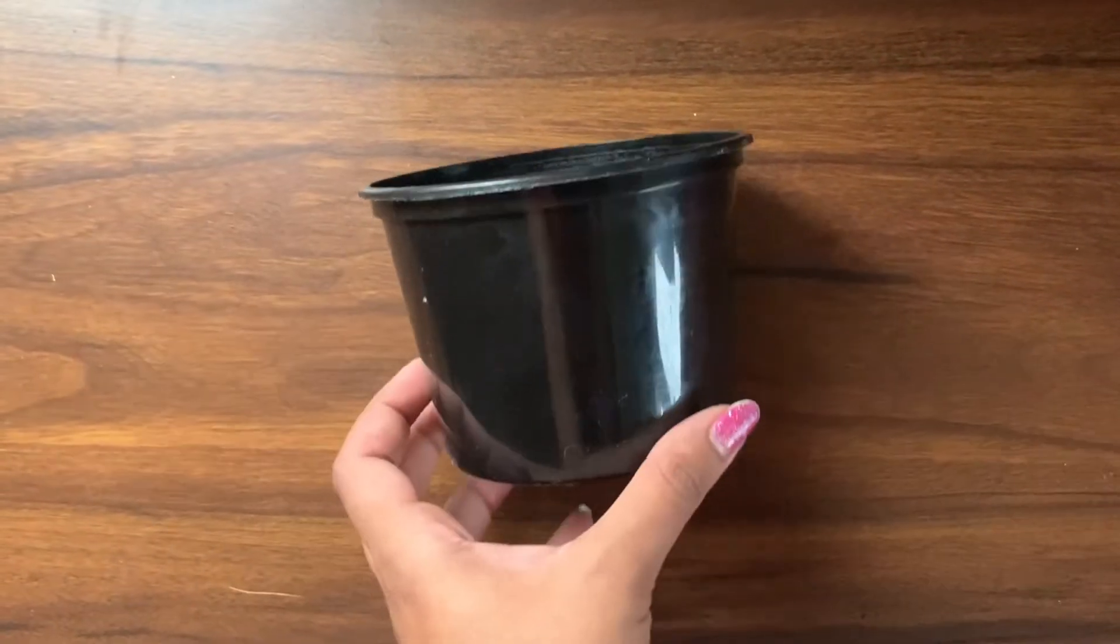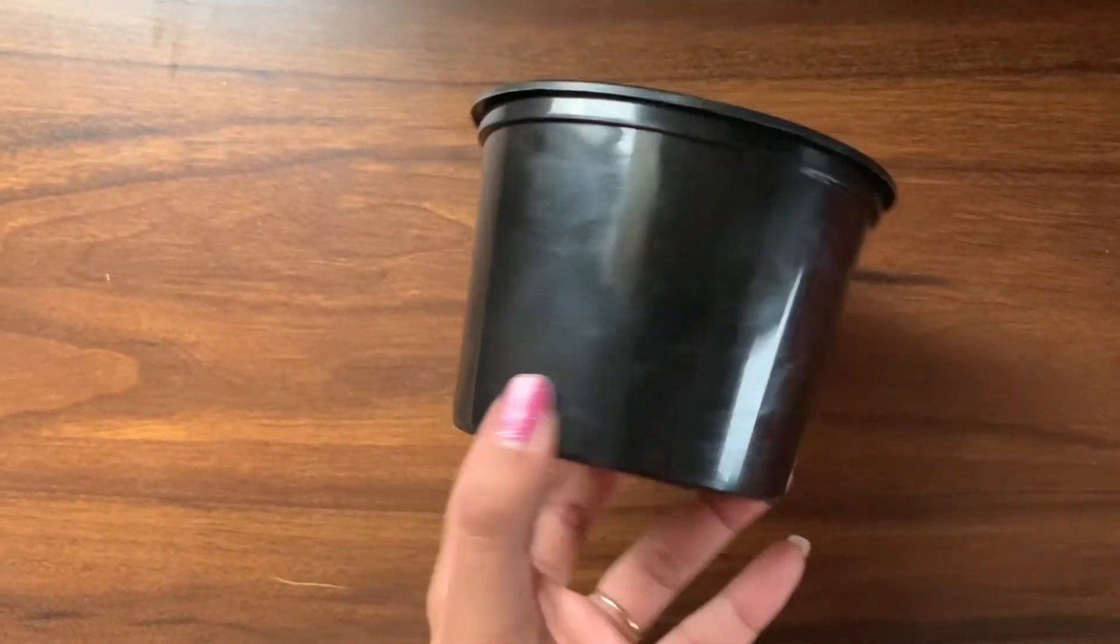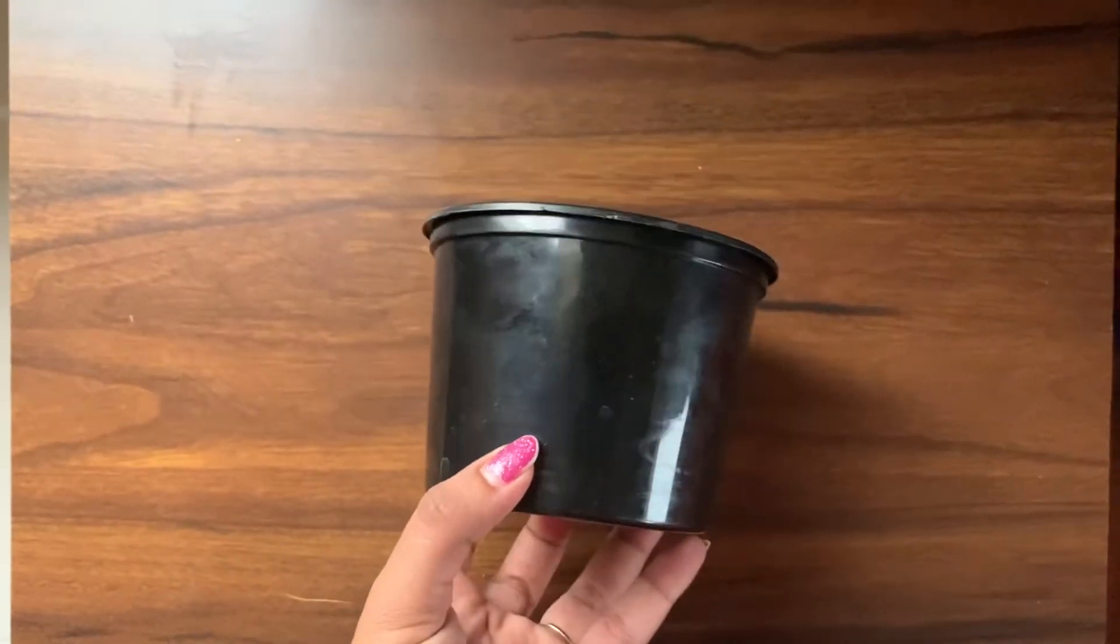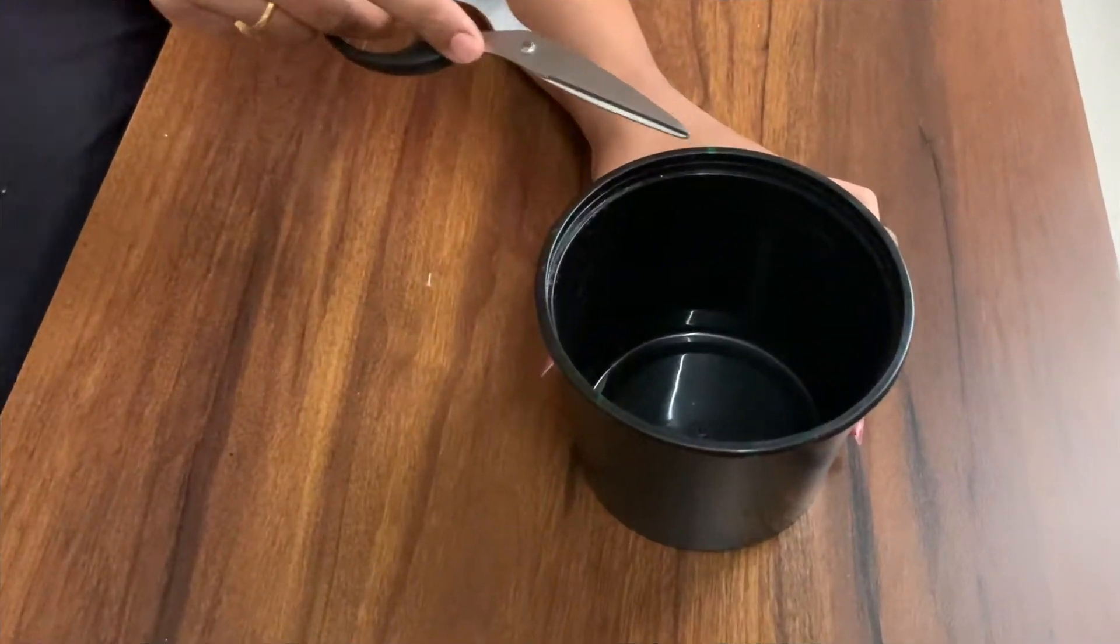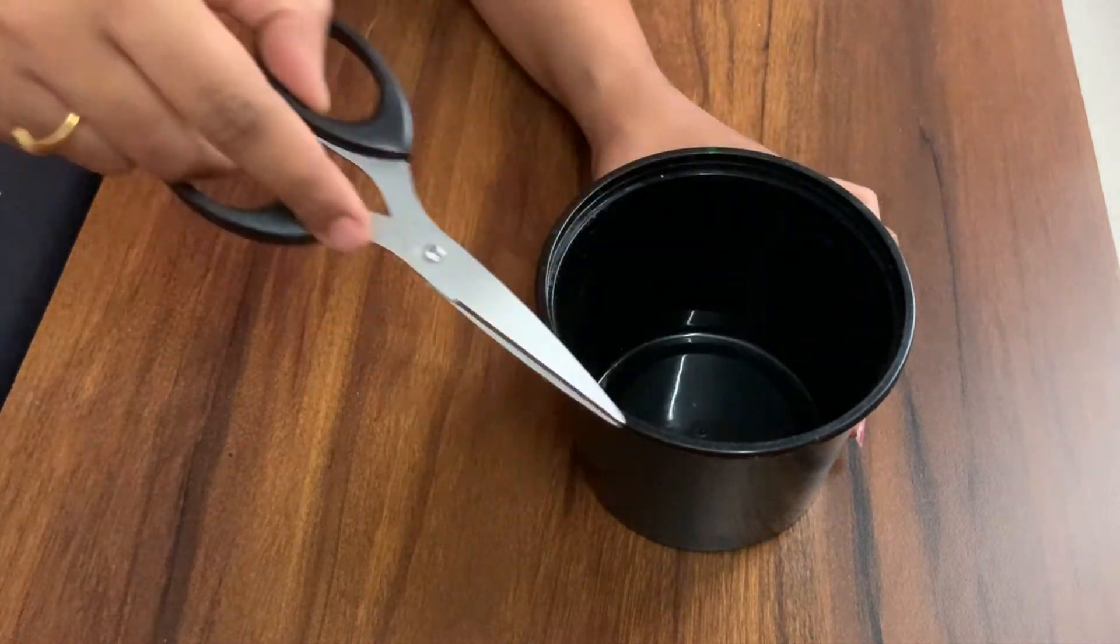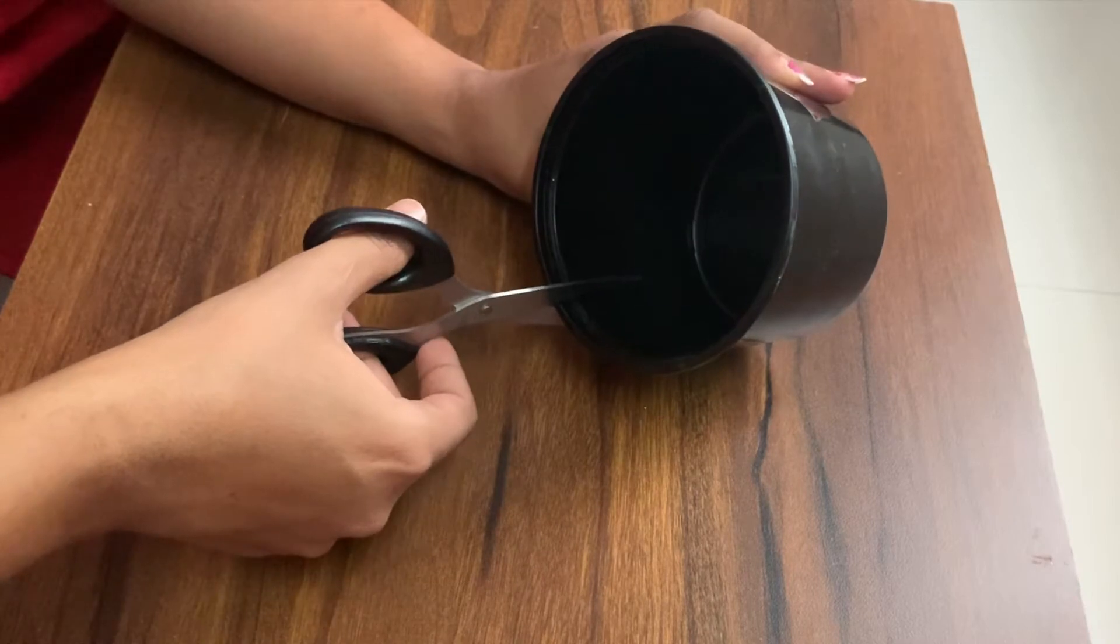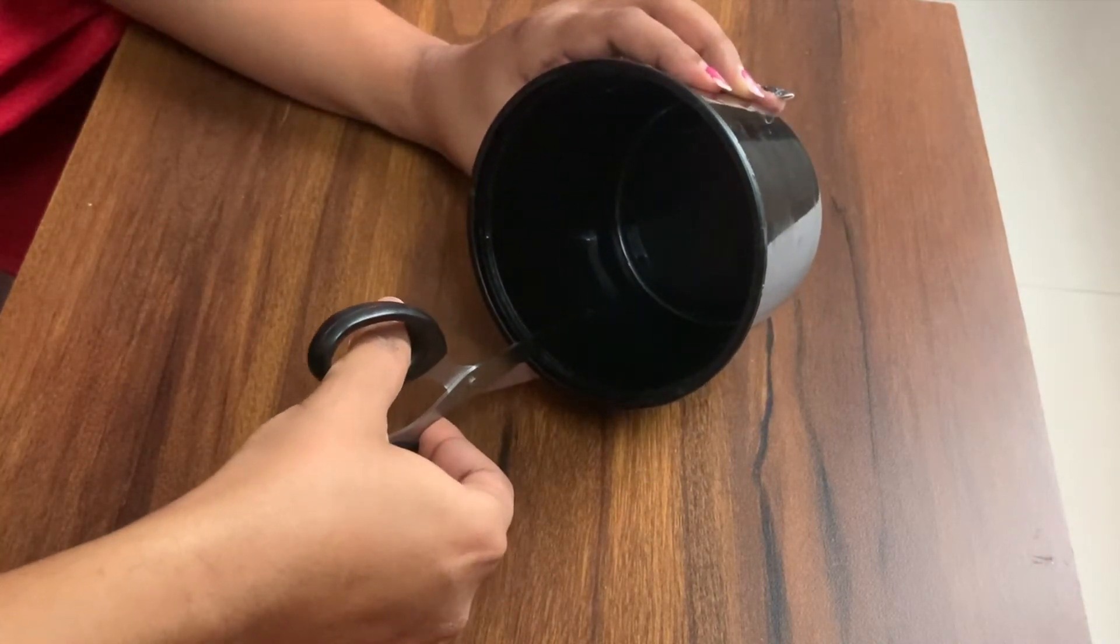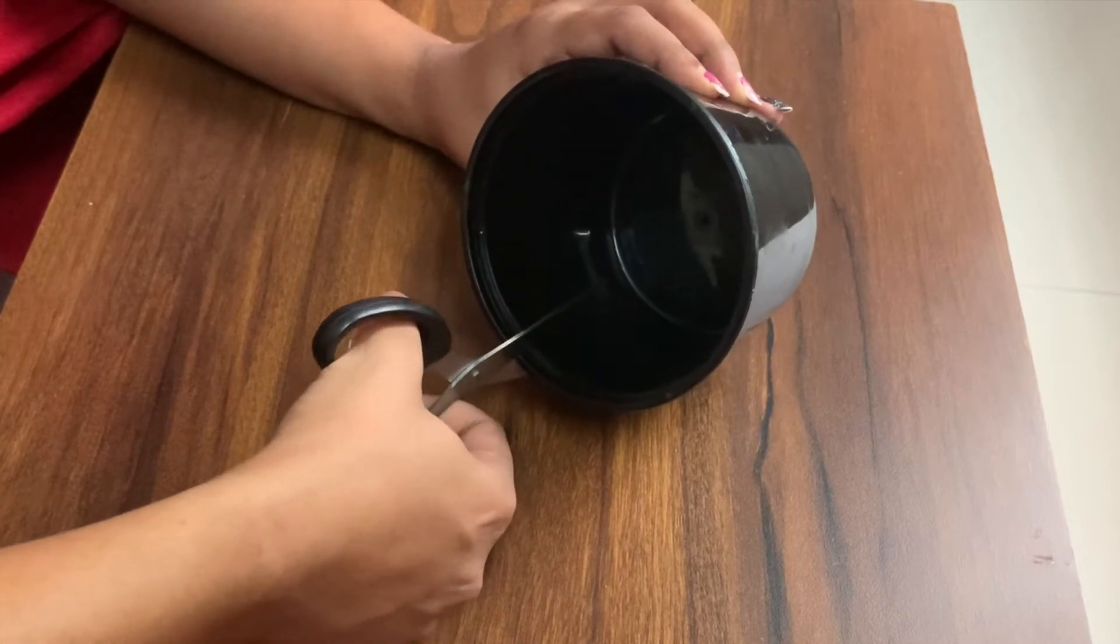For this DIY, we have a plastic container which is not too thick, because we have to cut from scissors. I will mark it with a sharp marker. We have to cut from the marker.